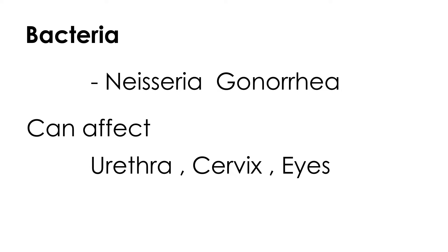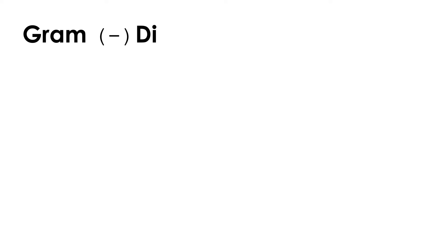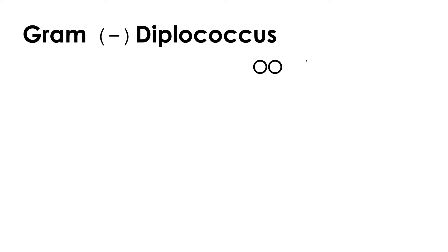Neisseria gonorrhea is described as a gram-negative diplococcus. What that means is that when you look at it under a microscope, it is a bacteria that appears in pairs. As mentioned, it is transmitted sexually, making it a sexually transmitted disease.